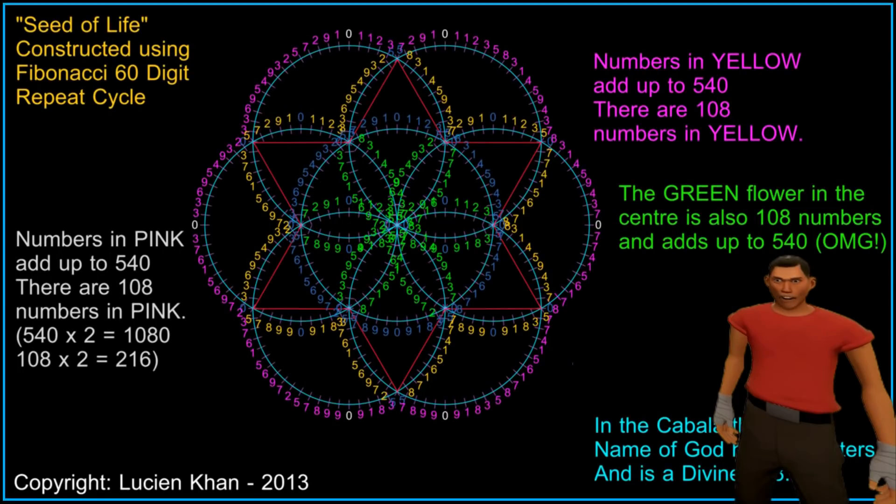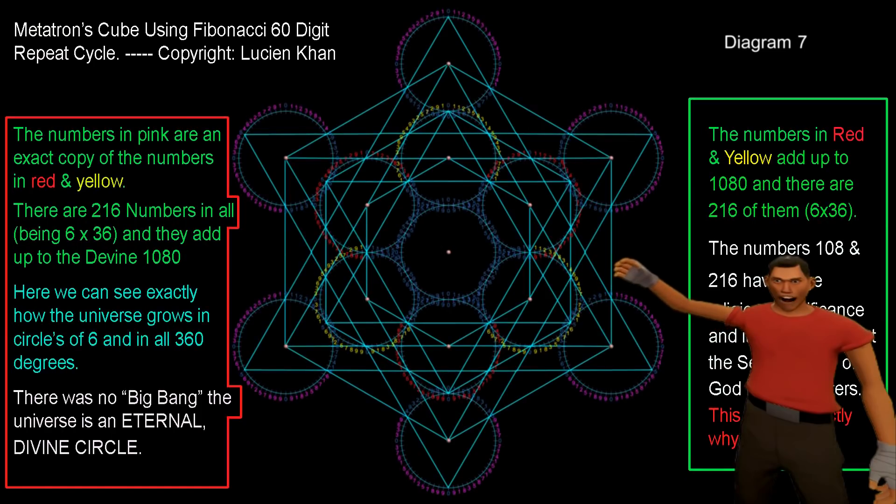The sum of these 216 numbers is 1080. Remember the seed of life was generating flowers of 108 numbers that added up to 540. Here we have 216 numbers that add up to 1080. The relationship between the seed of life and Metatron's cube is directly proportional.